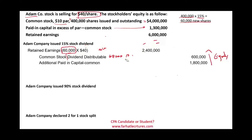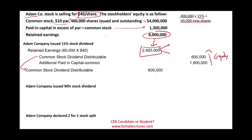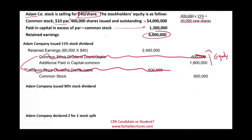From a business perspective, all we did is take part of the retained earnings — $2.4 million of the $600,000 retained earnings balance — and distributed it to the shareholders. The overall equity of the company remains the same. Shareholders will be very happy that they received additional shares. When we issue the actual shares, we debit Common Stock Dividend Distributable and credit Common Stock. The distributable account is gone; we issued stocks, credited paid-in capital, and debited retained earnings to reward our shareholders. This is an example of a small stock dividend.